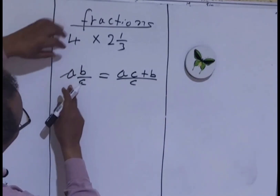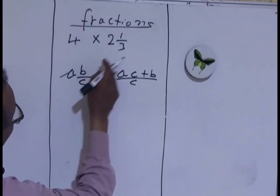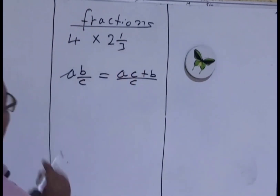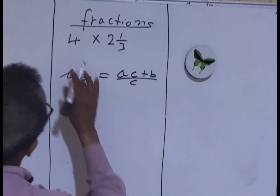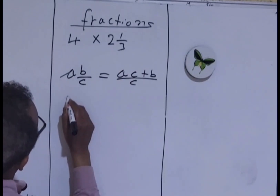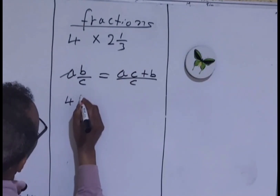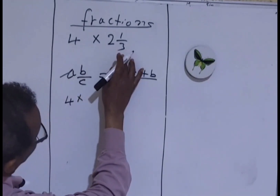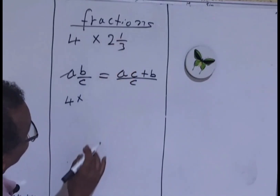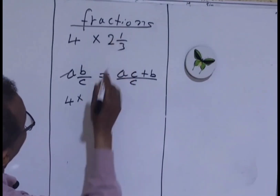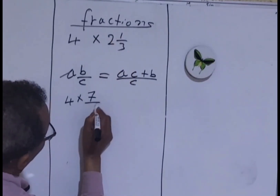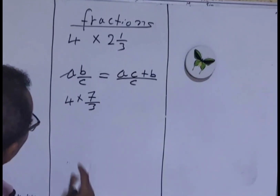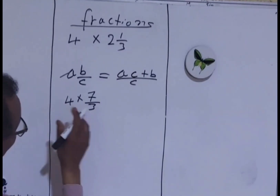So a is the whole number 2, b is the numerator, and c is the denominator. Let's do that: 4 times — 2 times 3 is 6, plus 1 is 7, so 7 over 3. So 7 over 3 is the improper fraction. Now let's multiply them.